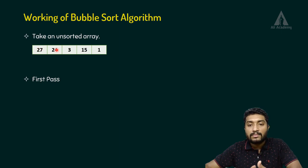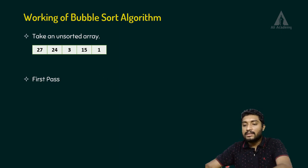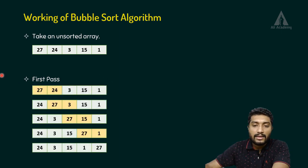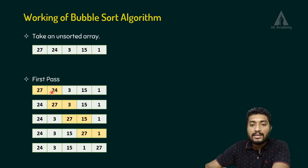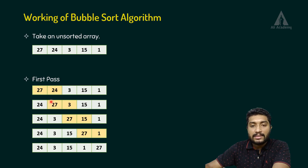So in the first pass, we check two adjacent elements. If the second element — say 24 — is larger and the next element is smaller, we swap. For example, we check element 24 and element 27; since 27 is already in order, in the first pass we can swap 27 further along.